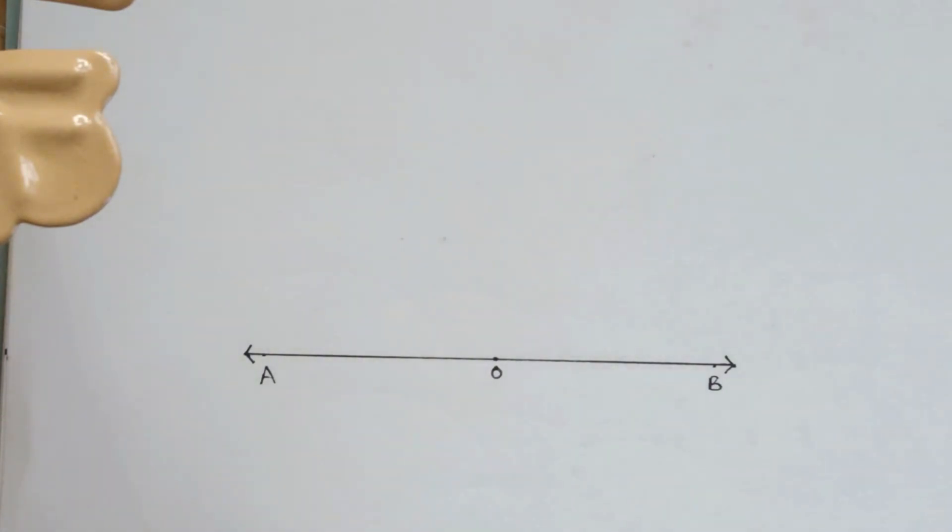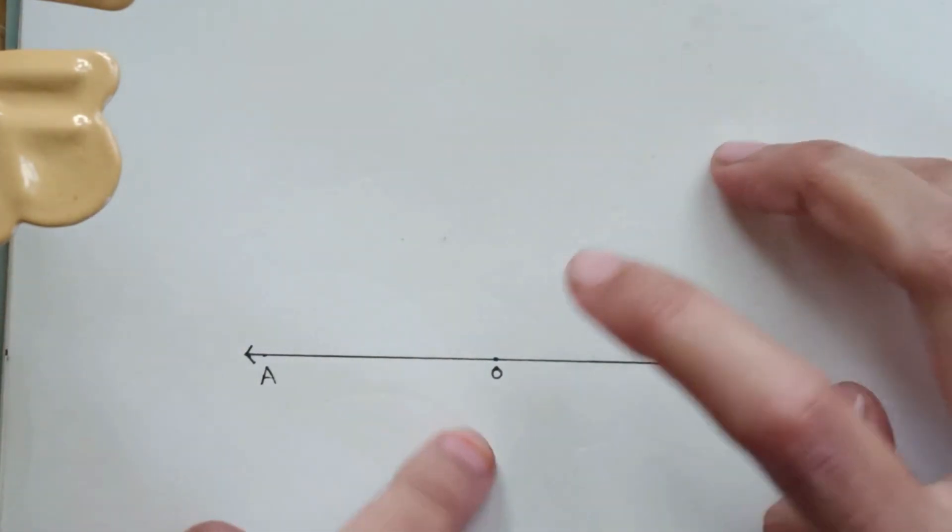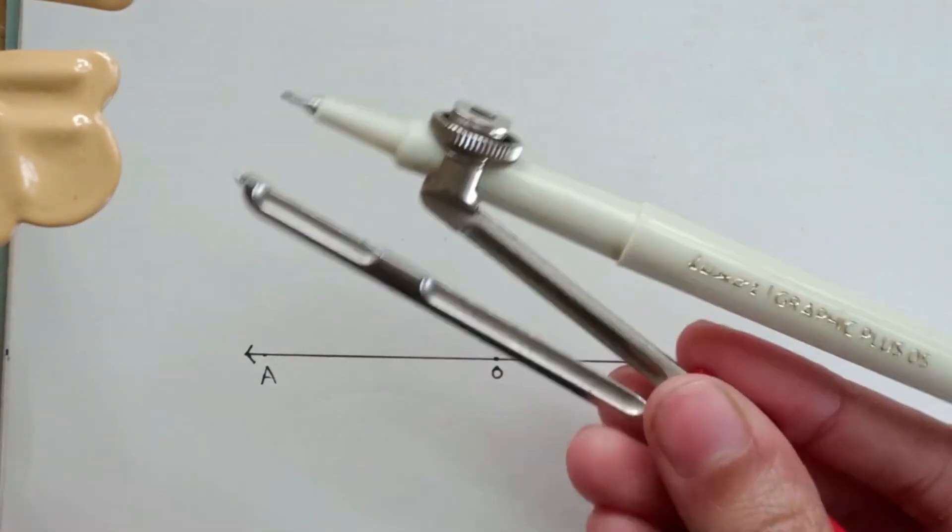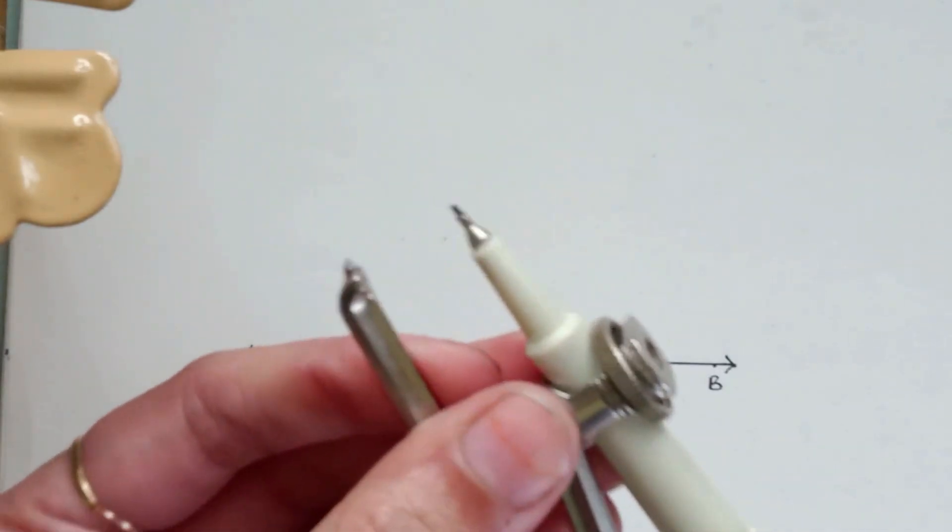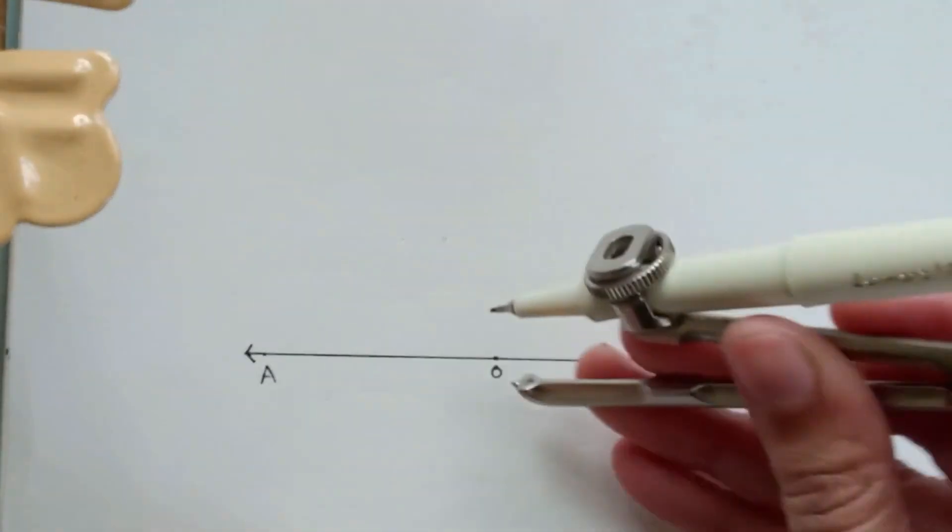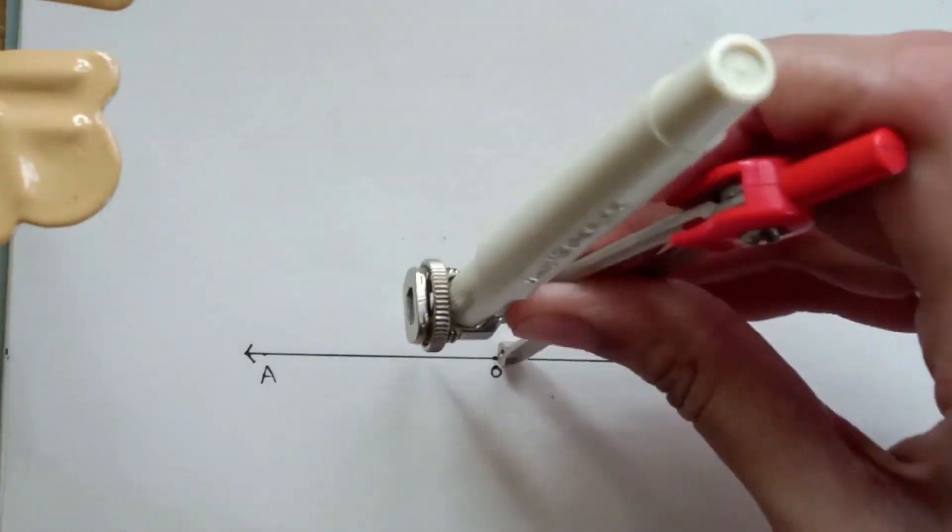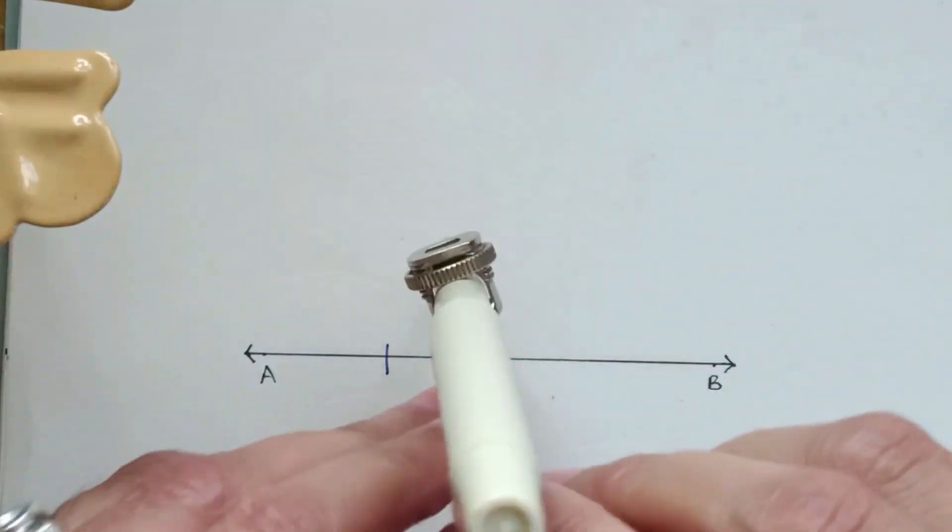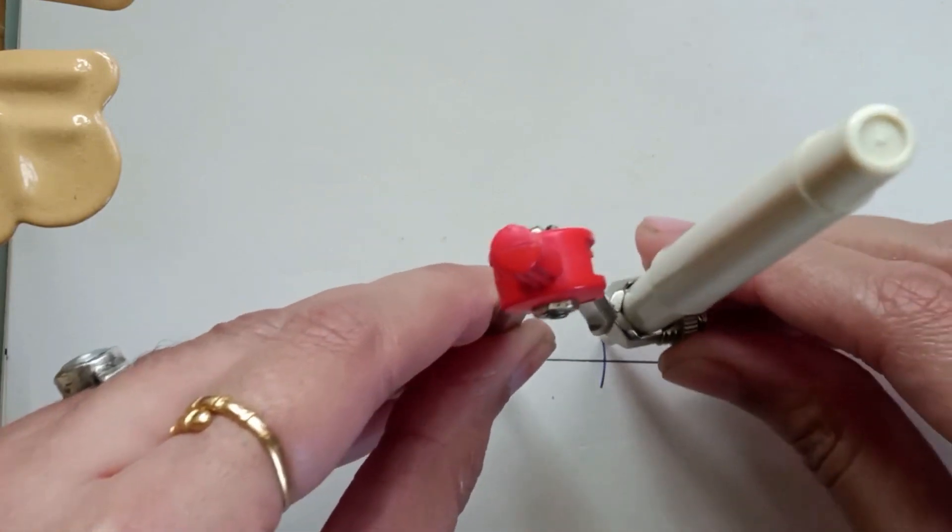So now we have to draw a 45 degrees angle which will go this way, somewhere here. For that, take your compass, take any random amount of distance between your compass, put the pointer on O and draw two arcs on the left and right.